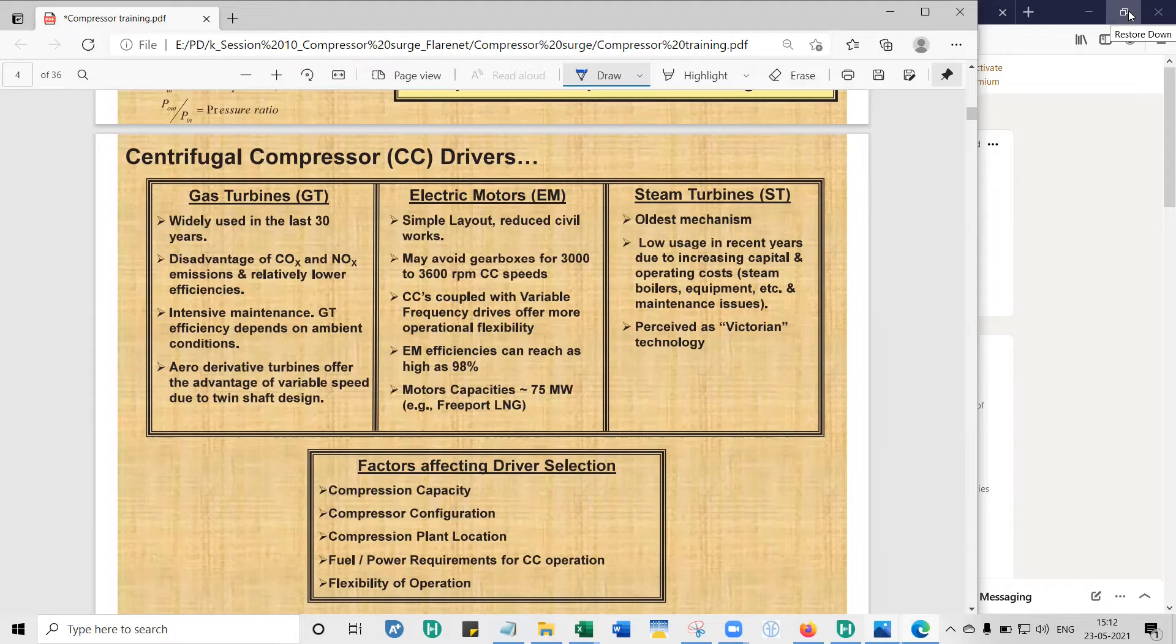So the first point is the compression capacity decides, is one of the points which decides the driver selection. That is, depending on how much power you need, you have to choose your driver. Second, compressor configuration. Do you have two compressors in series, where both the compressors are driven by one motor, with a common shaft running through both of them? Or you can have compressors in series, or you can even have compressors in parallel. If I decide to put an electric motor, and if it is within the capacity, yes, we can put that.